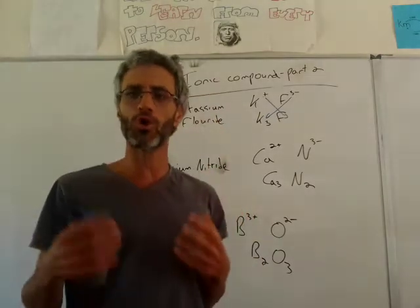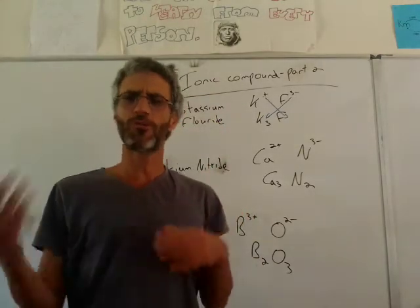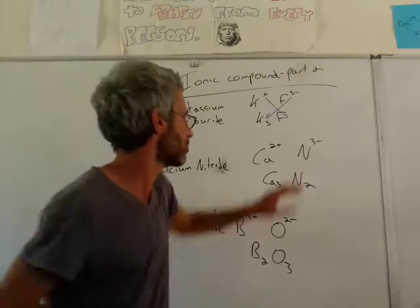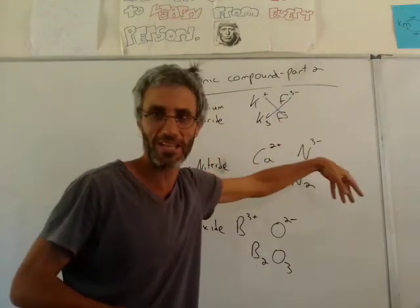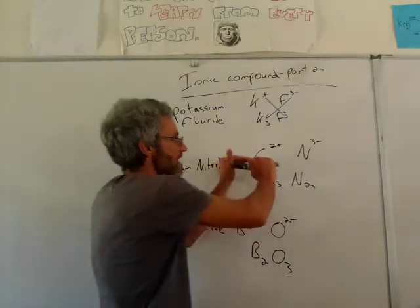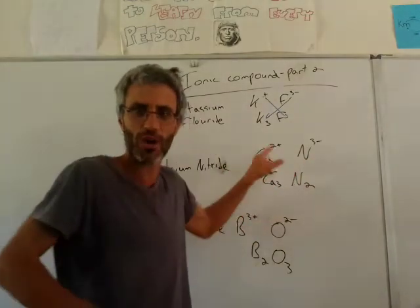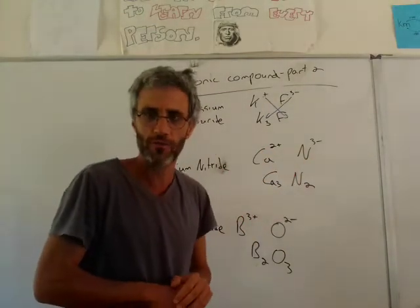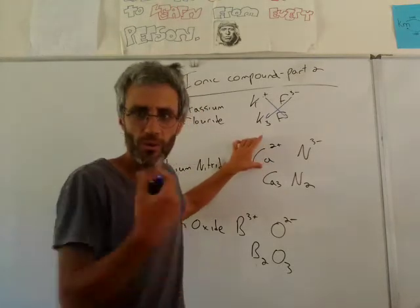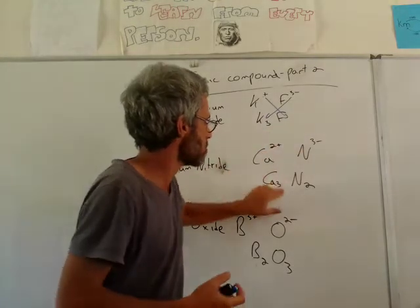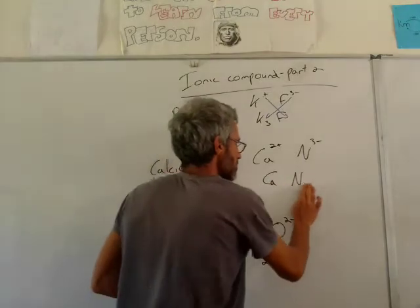This is what some people call the cross method. So instead of trying to think the lowest common multiple, you just can take the 3. Not the negative, leave the negative there. So basically what you do, you write down the ions. These are ions. You write the electric charges of them. You always start with the metal. You write the charges, and then you write down, I'm going to draw it for you here.